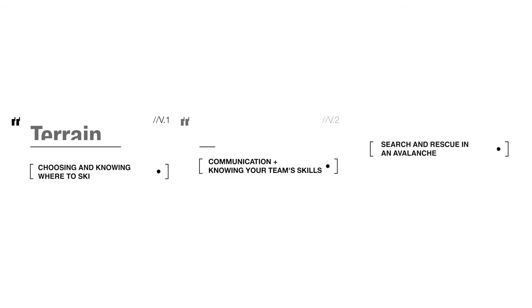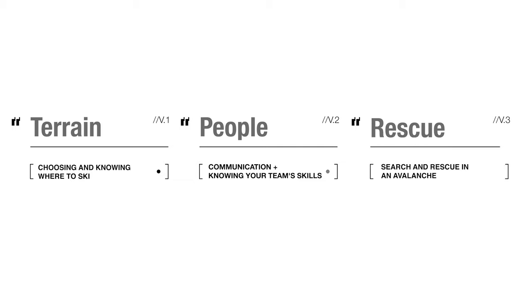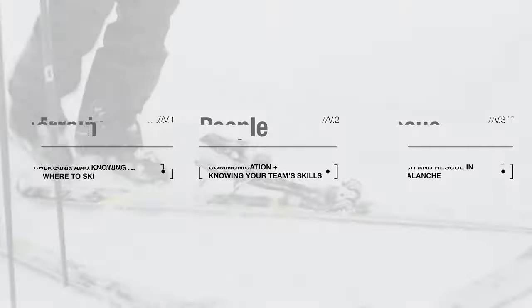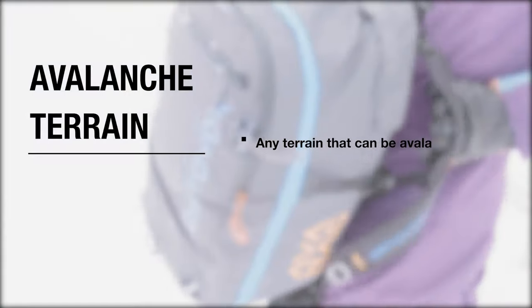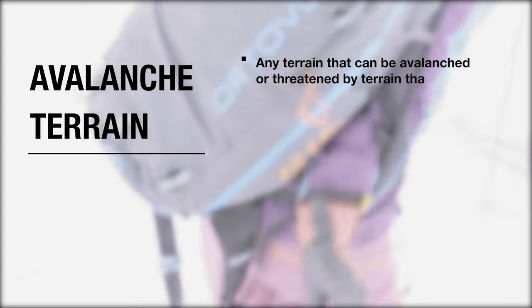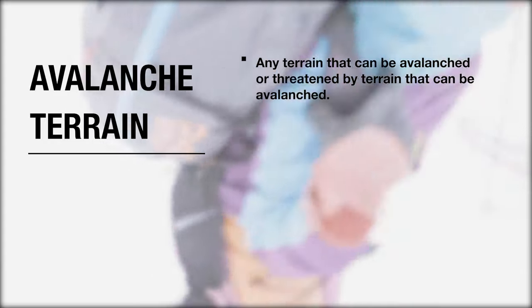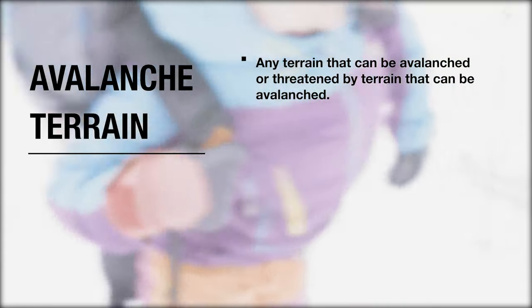In this three-part series, we will look at some of the key things to think about before heading into the backcountry this season. You'll hear people talk about avalanche terrain — so what is it? Avalanche terrain is any terrain that can be avalanched or is threatened by a slope that can avalanche.